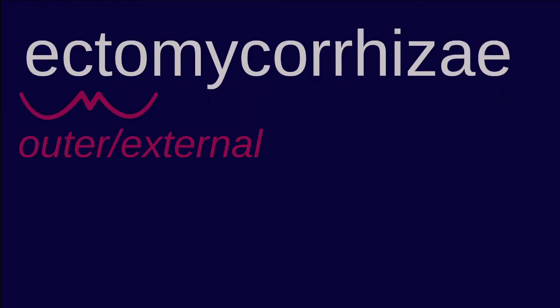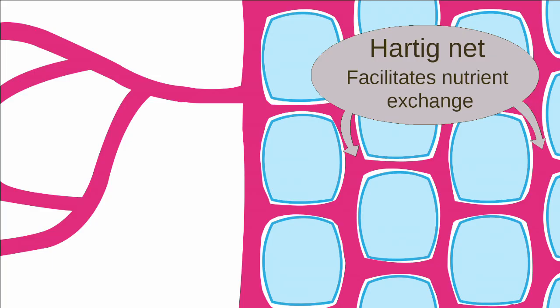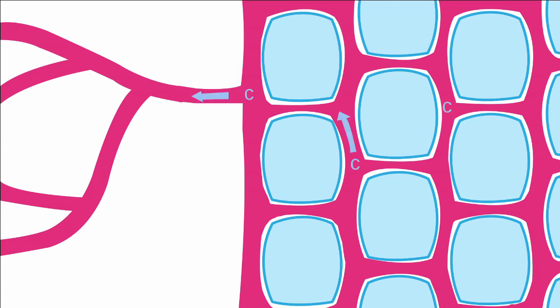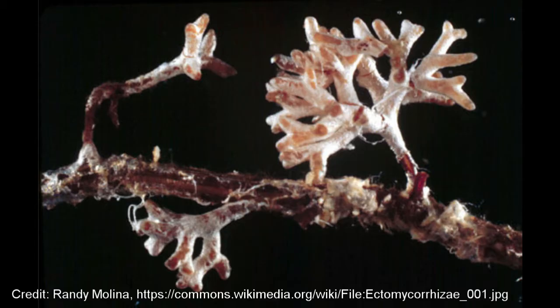Unlike endomycorrhizae, ectomycorrhizae does not penetrate the plant's root cells. Instead it forms outside and between the cells. A hartig net forms between the cells, helping with the exchange. Ectomycorrhizae shares water and soil nutrients and repels parasites and soil pathogens in exchange for carbon. In this photo you can see the fungal sheath that forms around the plant roots and acts as a storage place for nutrients. It is less common than endomycorrhizae, with around only 3% of plants forming this association. Ectomycorrhizal fungi species can also form one or more plant associations.